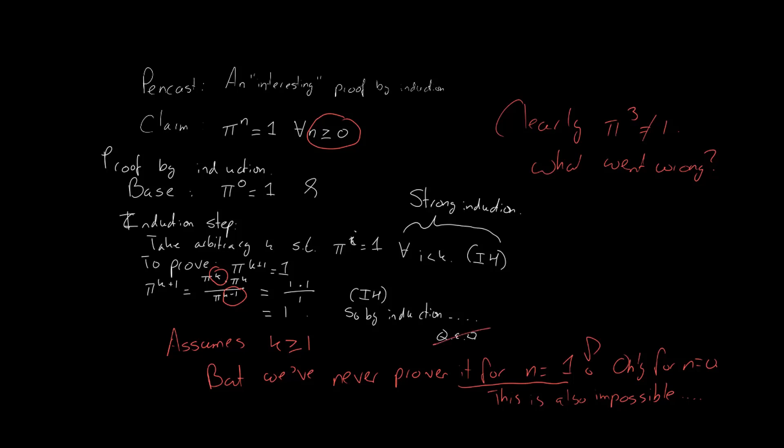In this case we did not, which means that this proof is invalid. Which makes sense, as the theorem is false.